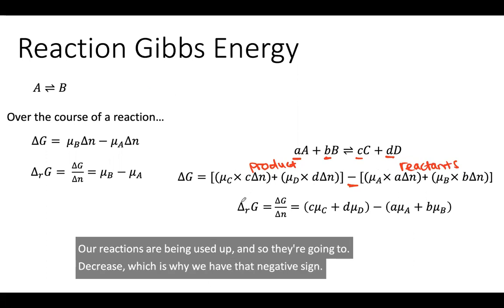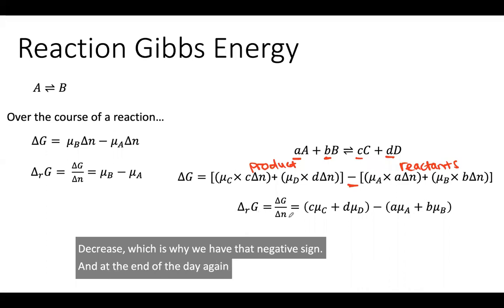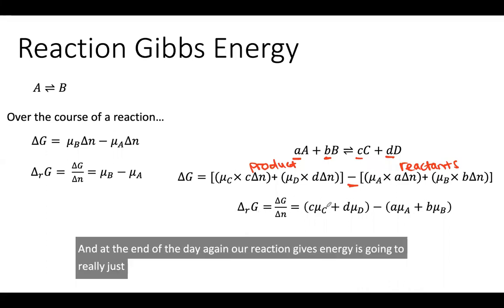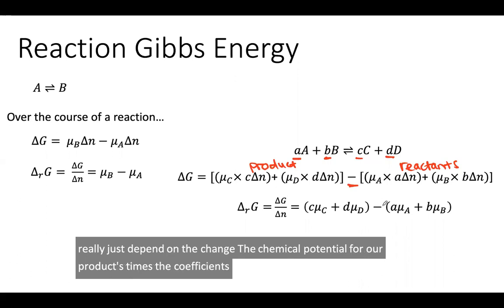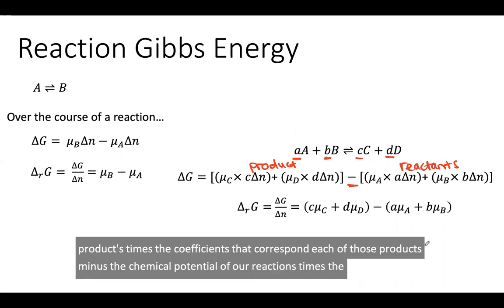And at the end of the day, our reaction Gibbs energy is going to really just depend on the chemical potential for our products times the coefficients that correspond to each of those products minus the chemical potential of our reactants times the coefficients that correspond to those reactants.